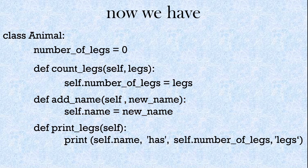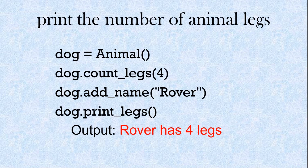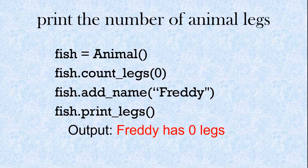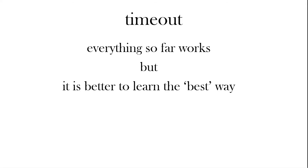So we add another method to add the name, so the user can pass a name to the class. The class now counts legs, adds a name, and prints legs. When we create the dog, count the legs, add a name — in this case Rover — and print the legs, the output is 'Rover has four legs'. For a fish called Freddy, the output is 'Freddy has zero legs'. We haven't made a mistake, but we haven't shown you the best way yet.